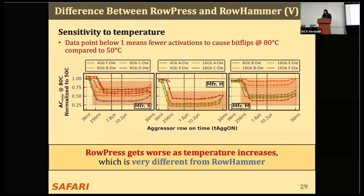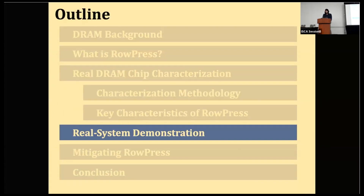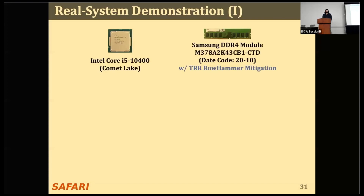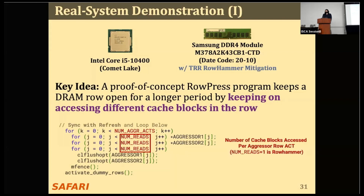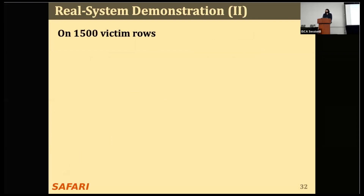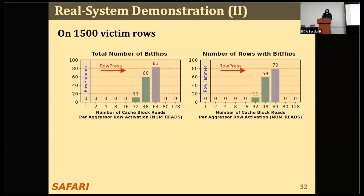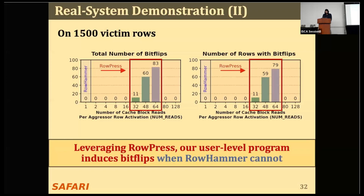RowPress gets worse as temperature increases, which is also very different from RowHammer. Now let's see our real system demonstration of RowPress. We demonstrate RowPress in a system with a recent Intel processor and a Samsung DDR4 module that already has TRR RowHammer mitigation. The key idea of our RowPress program is to keep a DRAM row open for a longer period of time by continuously accessing different cache blocks in the same row. We run the program on 1,500 arbitrarily selected victim rows, and we show the total number of bit-flips as we change the number of cache blocks accessed per aggressor activation. We conclude that leveraging RowPress, our user-level program induces bit-flips when RowHammer cannot.